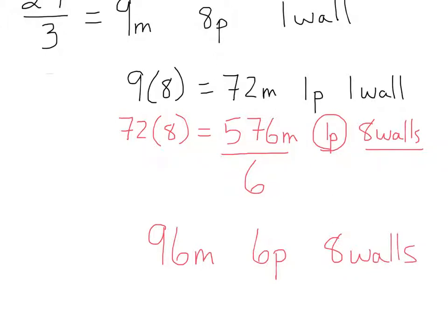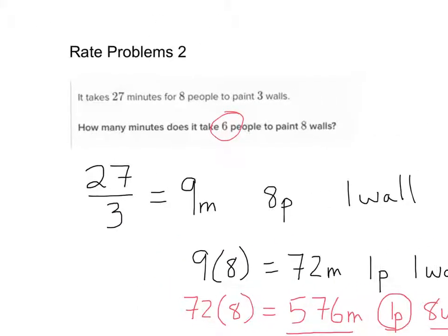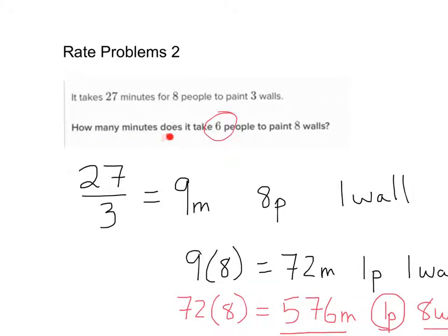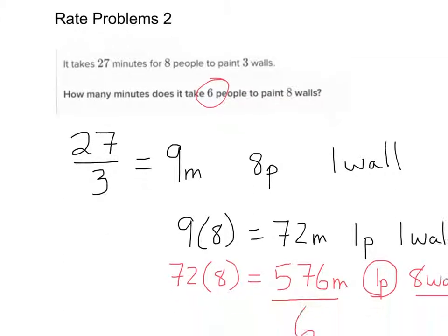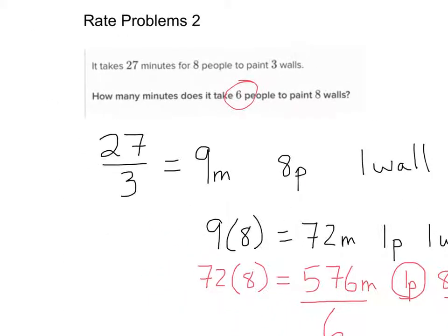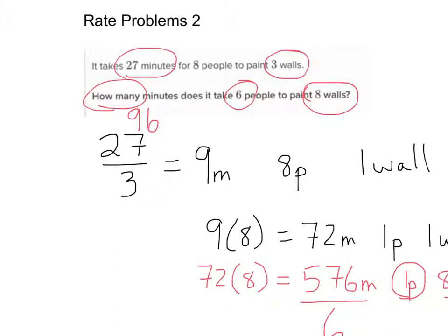On Khan Academy the answer would be 96, because the question asked how many minutes it takes 6 people to paint 8 walls — and we calculated 96 minutes. This makes sense: you've got 8 walls here versus only 3 walls in the original problem, which is why there's a difference in time.